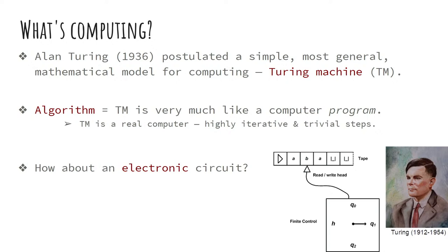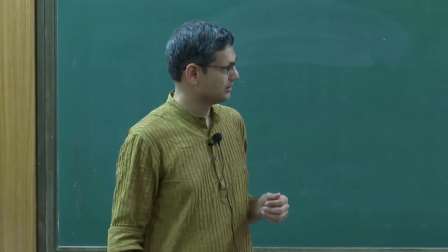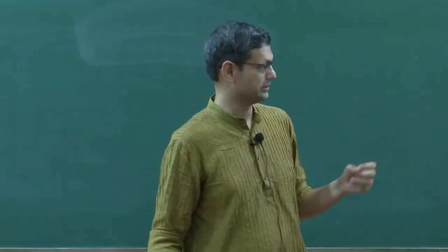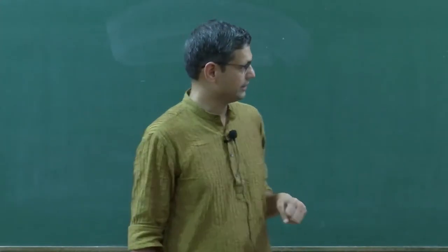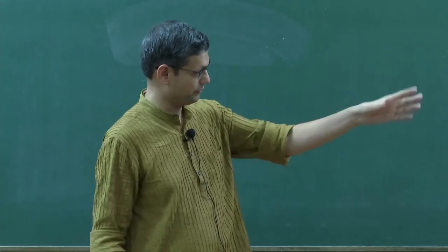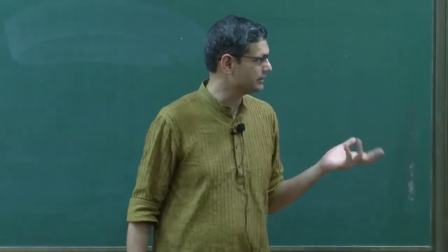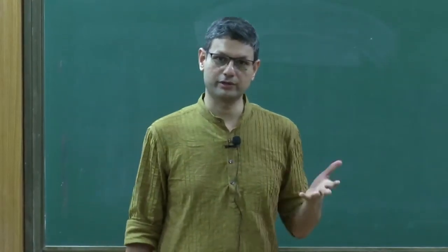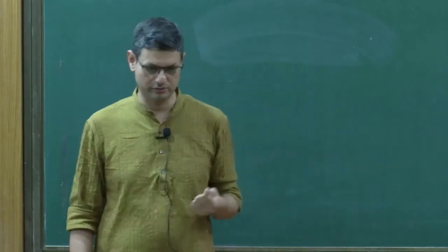My interest is not in working with Turing machines — I work with circuits. An electronic circuit has microprocessor chips and AND, OR, NOT gates. Circuits are a better model to study computation. Algebraically it's a neater model — I can make sense of atomic operations more algebraically: an atomic operation is either an addition or multiplication in some field, and at every point I am computing a polynomial. I can then invoke results from the polynomial ring, which is what I prefer to do.